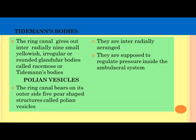Then come the Tiedemann bodies. The ring canal gives out small interradially placed yellowish irregular or glandular bodies called Tiedemann bodies. The ring canal also bears on its outer side five small pear-shaped structures called the polian vesicles, which are interradially arranged and are supposed to regulate the pressure inside the ambulacral system.